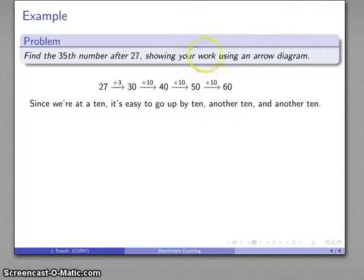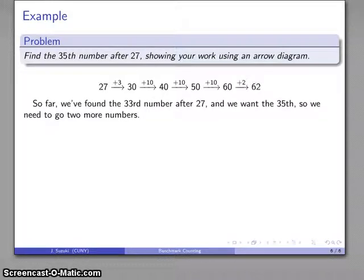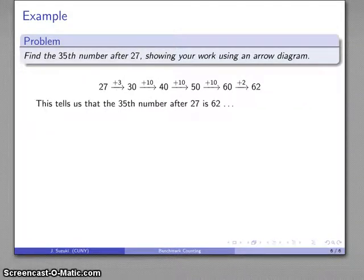So, all together, I've gone up by ten, twenty, thirty-three. I want to go up to the thirty-fifth number, so that's going to take me two more, to sixty-two. And this tells me that the thirty-fifth number after twenty-seven is sixty-two.